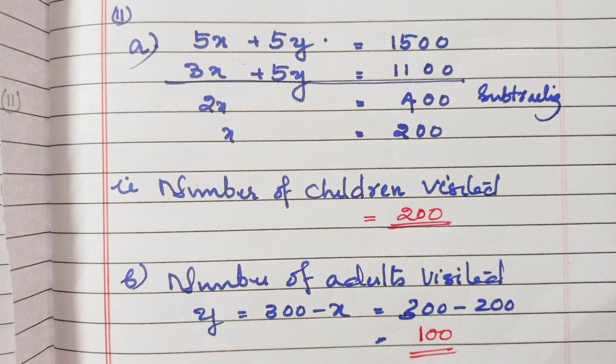The next part of the question is: how many adults visited the amusement park that day? Since we know that X plus Y is equal to 300, Y is equal to 300 minus X, that is 100. That means the number of adults who visited the park on that day is 100.